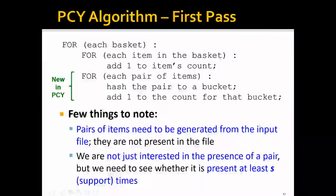More concretely, for each basket and each item in the basket, we will add 1 to the item's count, as already discussed in the A-Priori algorithm. What's new in the PCY algorithm is that for each pair of items, we hash the pair to a bucket and add 1 to the count of that bucket. A few things to note: pairs of items need to be generated from the input file on the fly; they're not already present in the file.